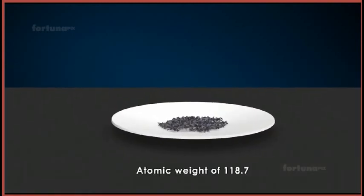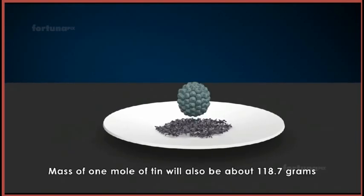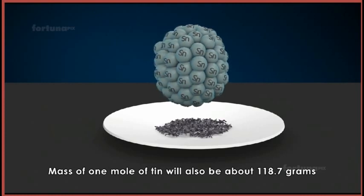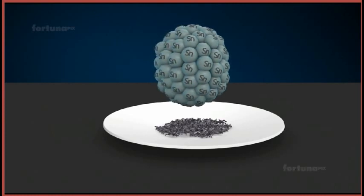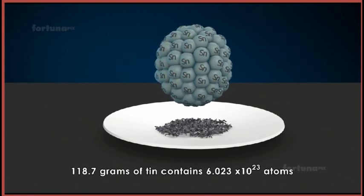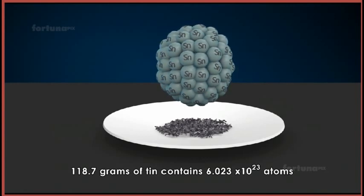Let's look at tin, which has an atomic weight of 118.7. The mass of one mole of tin will also be about 118.7 grams, implying that 118.7 grams of tin contains 6.023 times 10 to the power of 23 atoms.